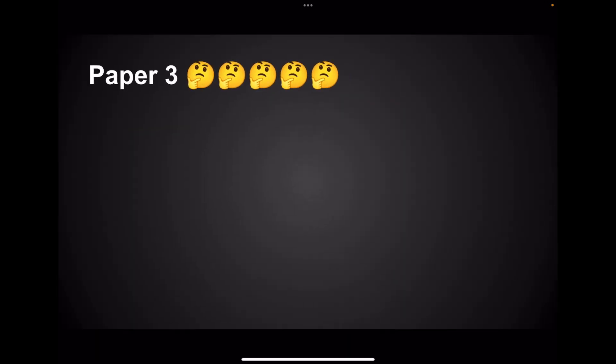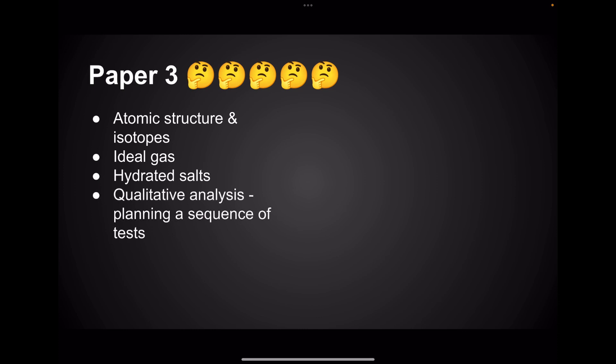Right, here's what I'm thinking for Paper 3 on Friday, so I'll break it up into physical and inorganic and organic. So we'll start with physical and inorganic: atomic structure and isotopes, ideal gas calculation, hydrated salts, qualitative analysis, so that's the planning of a sequence of tests for your inorganic ions, and don't forget about the transition element ions in there as well.